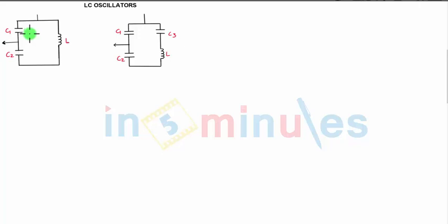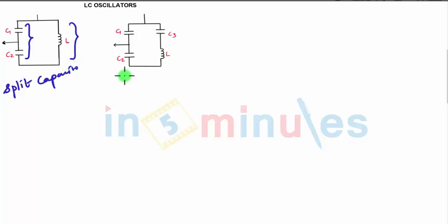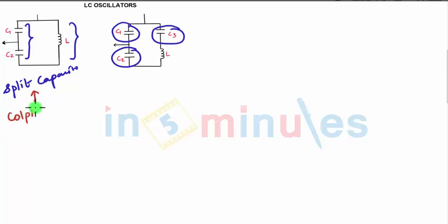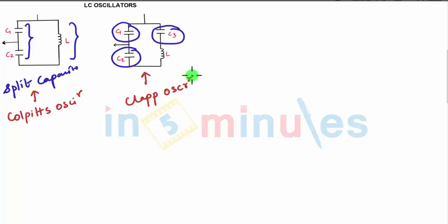In this case you can see the capacitors are split and the inductor is the same, so it is nothing but a split capacitor oscillator. Similarly, here again the capacitors are split and in series with the inductor you have one capacitor. The name for this split capacitor configuration is the Colpitts oscillator, and for this one it is the Clapp oscillator. This is how we have different types of oscillators.